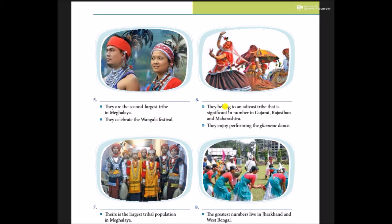They belong to an Adivasi tribe that is significant in number in Gujarat, Rajasthan and Maharashtra. They enjoy performing the Ghumar dance. The name of the tribe is Bhils — B-H-I-L-S.